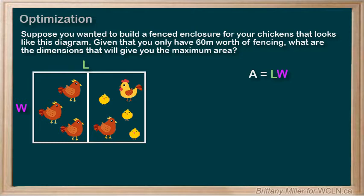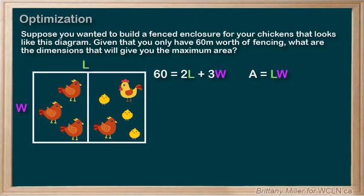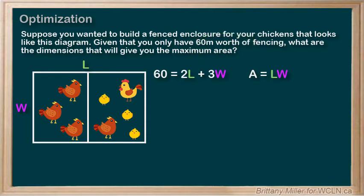We don't know A, L, or W, and this doesn't look like a quadratic at all. Luckily, we were given another piece of information — a constraint. Because we only have 60 meters of fencing, we can't just make the enclosure as big as we want. Let's write it out as an equation. 60 meters of fencing will be used for two of the lengths and three of the widths, so our constraint is 60 equals 2L plus 3W. This allows us to solve for L and substitute into the area function so that we only have one variable to worry about.